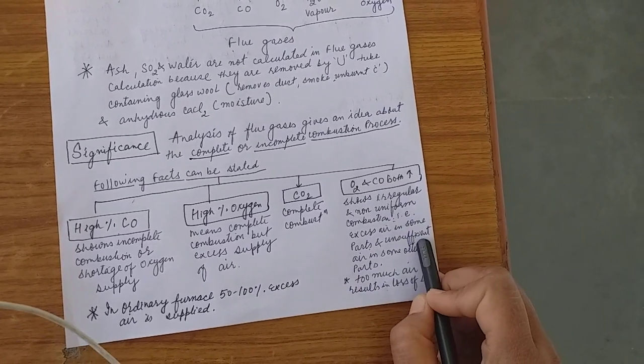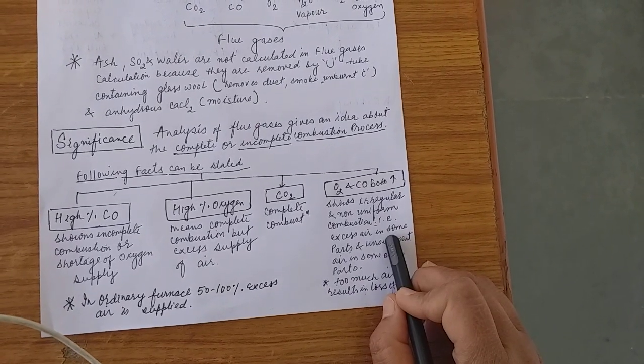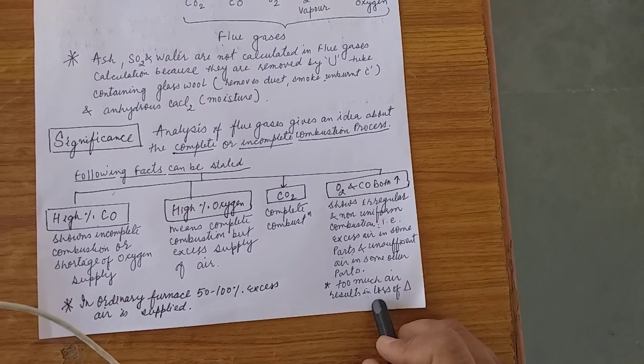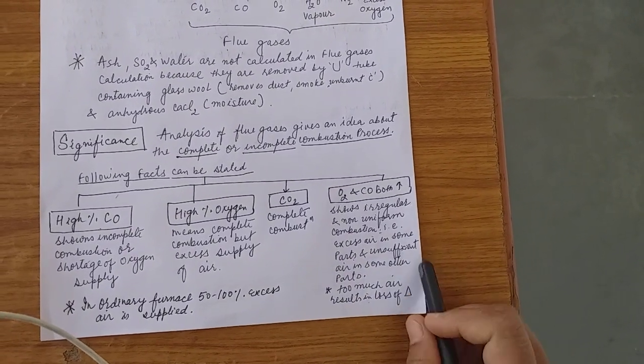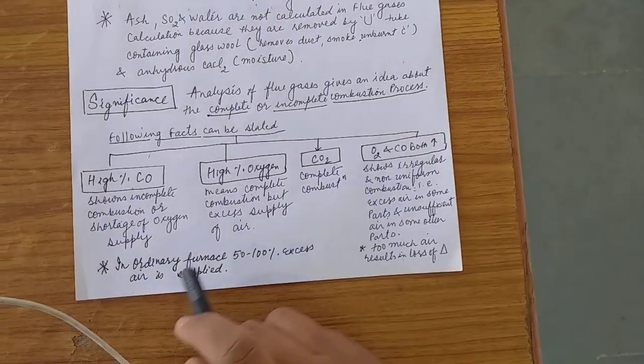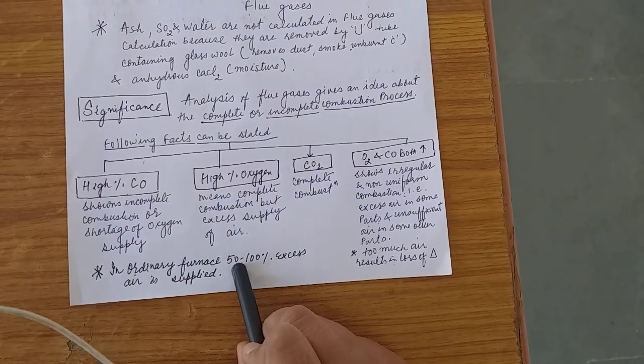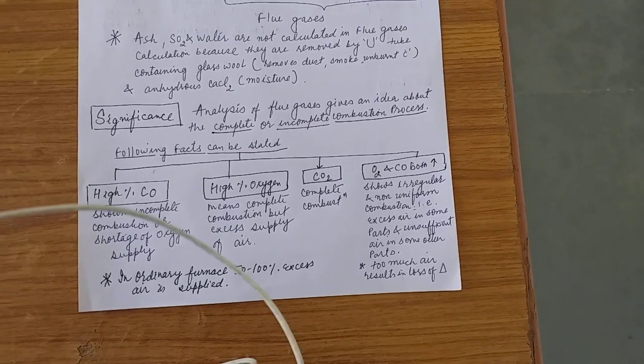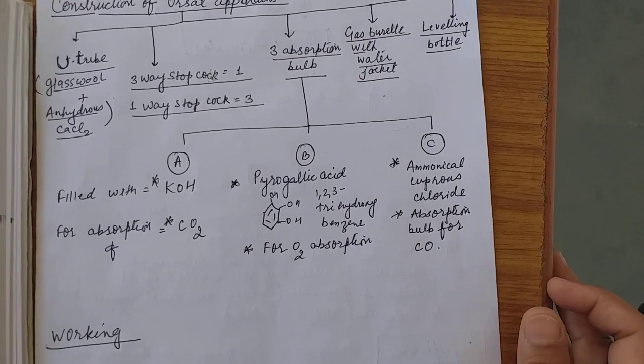That is some of the area with the excess of air and some of area with insufficient oxygen. Therefore, carbon monoxide is formed. Excess of air also results in loss of heat. Therefore, excess of heat should be minimized. In ordinary furnace, 50 to 100 percent excess air is supplied.